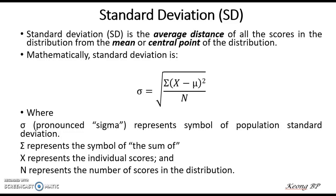Now we try to look at another very common measure, which is the standard deviation. Standard deviation is defined as the average distance of all scores in the distribution from the mean or central point of the distribution. Mathematically, standard deviation is calculated using a formula, and the standard deviation in this formula is represented by a mathematical symbol pronounced as sigma.